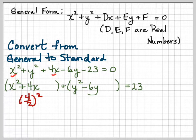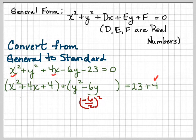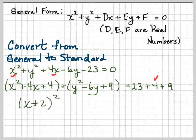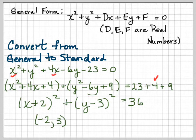Now, taking 4 divided by 2 and squaring it will give us our constant term for here. And that's 4. So I also have to add it to this side to balance my equation. And this one is going to be minus 6 over 2, which is minus 3 squared, which is positive 9. So you have to add 9 on both sides. So now what does this mean? Well, this first perfect square is x plus 2, the quantity squared. And y minus 3, the quantity squared, equals 36. So minus 2, 3 is my center and my radius is 6.